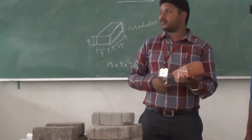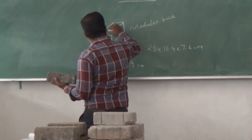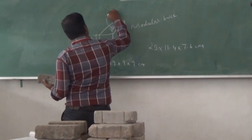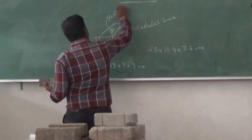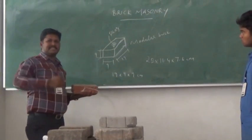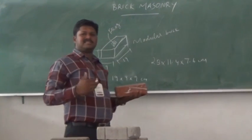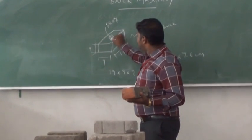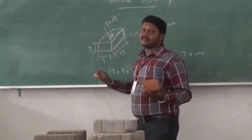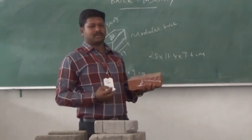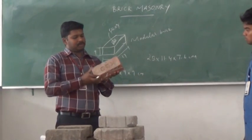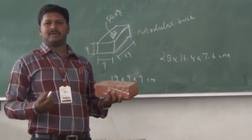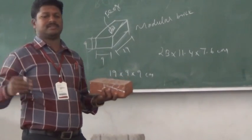Next we go to the frog. What do you mean by frog? Frog is the depression or hollow indentation used for retaining the mortar. The usage of frog is for bonding the mortar between the consecutive courses.